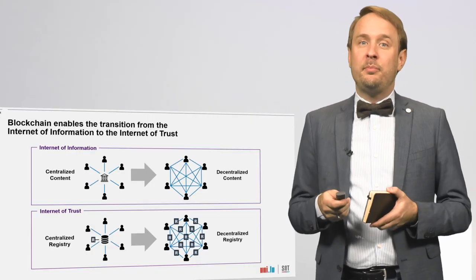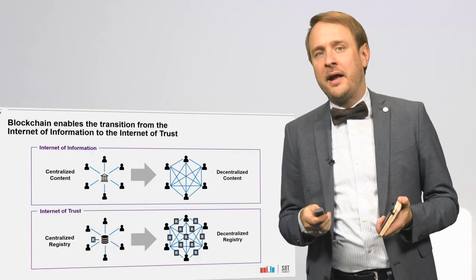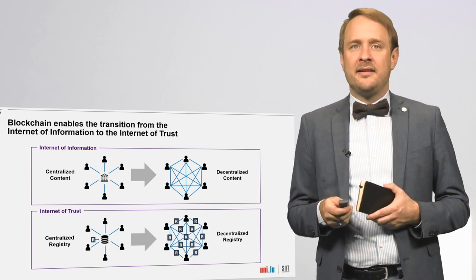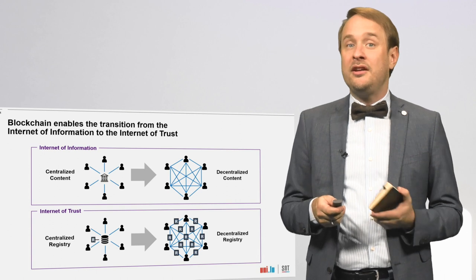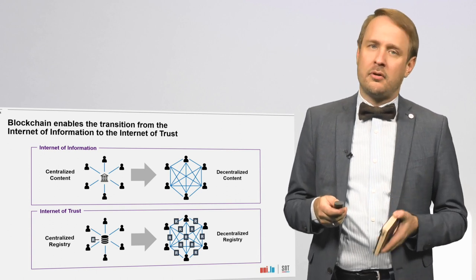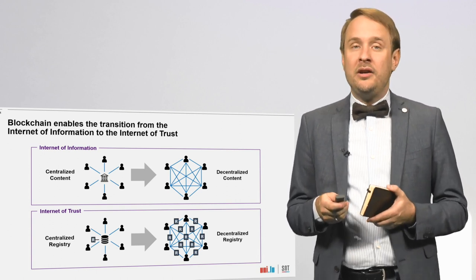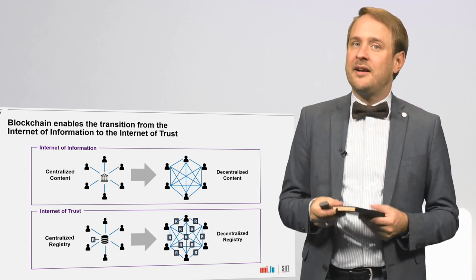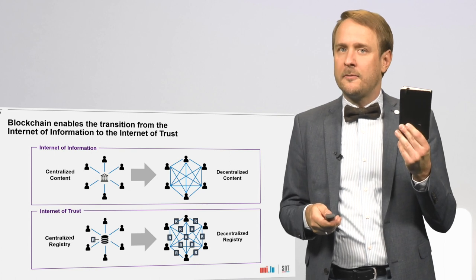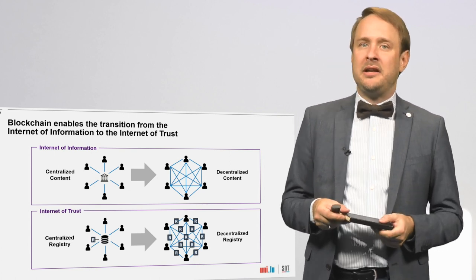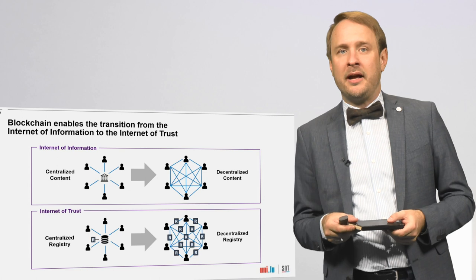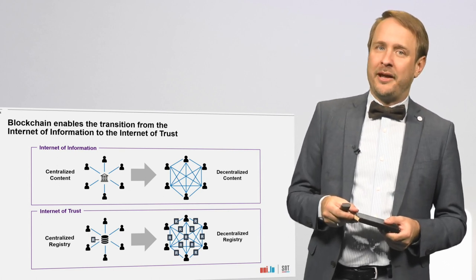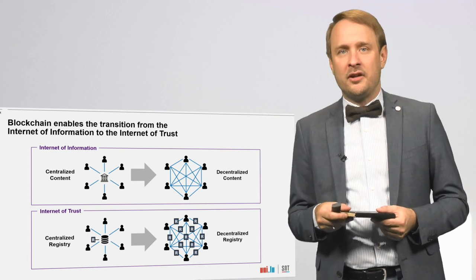Cryptocurrencies aim to be an alternative to the banking system and central banks in terms of payments. However, blockchain can enable many use cases in addition to cryptocurrencies. The only prerequisite is that a use case requires some level of trust that can be fulfilled by our magic notebooks. This is why many people believe that blockchain will imply a paradigm change from the Internet of Information to the Internet of Trust.